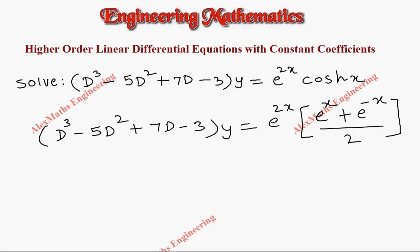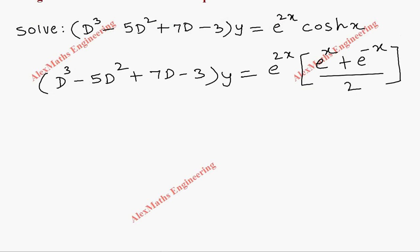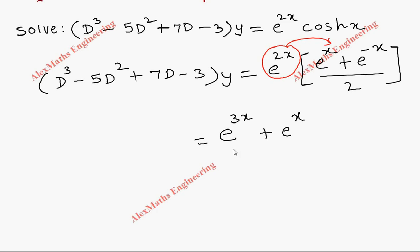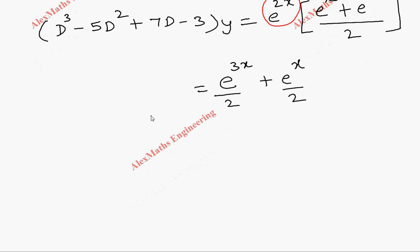We multiply the outside term e^(2x) with both terms inside. Since bases are the same, we add the powers: e^(2x)·e^x = e^(3x), and e^(2x)·e^(-x) = e^x, each divided by 2.